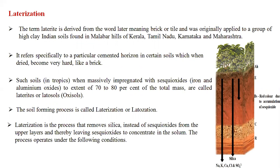The term 'laterite' is derived from the Latin word 'later,' meaning brick or tile. These brick-like formations are found in the Malabar hills of Kerala, Tamil Nadu, Karnataka, and Maharashtra. Laterites contain a high amount of sesquioxides — up to 70–80% of the total mass. Lateralization is the process that removes silica instead of sesquioxides from the upper layer, leaving sesquioxides concentrated in the soil.